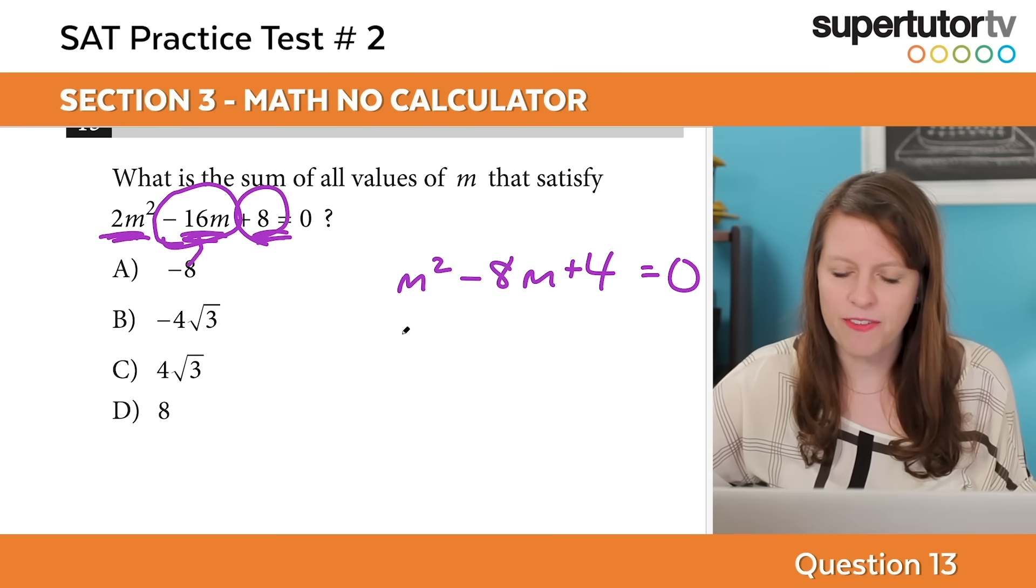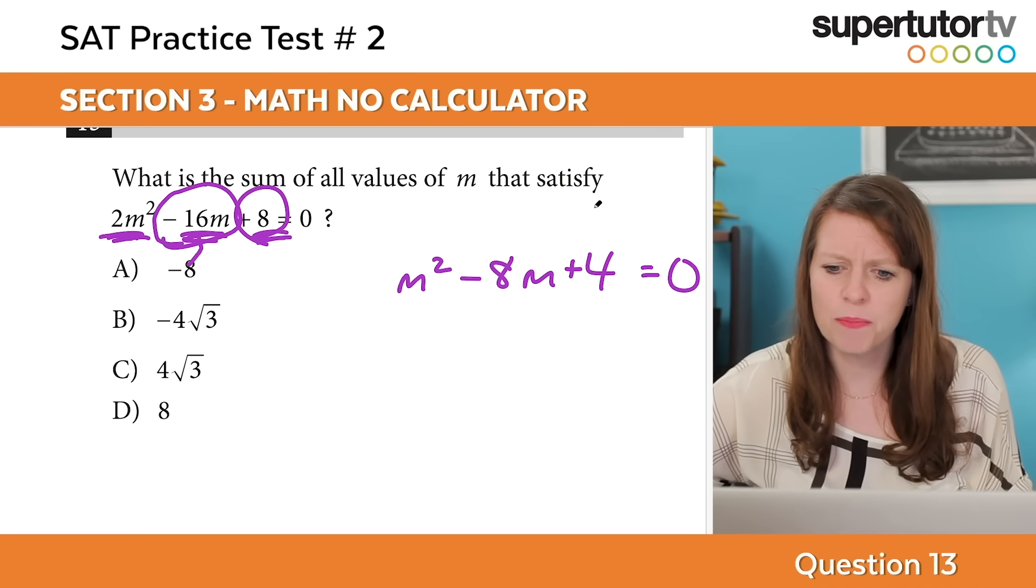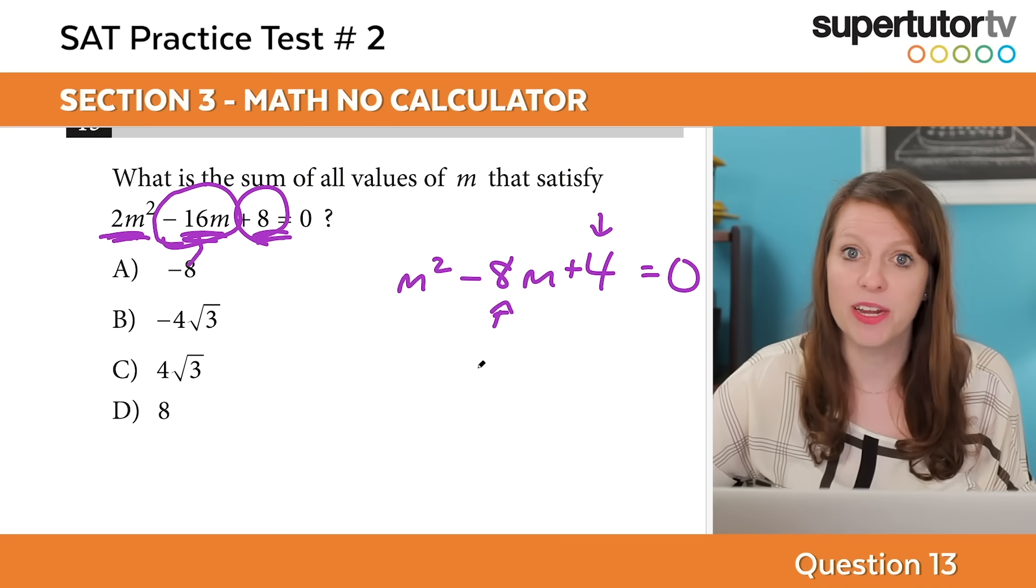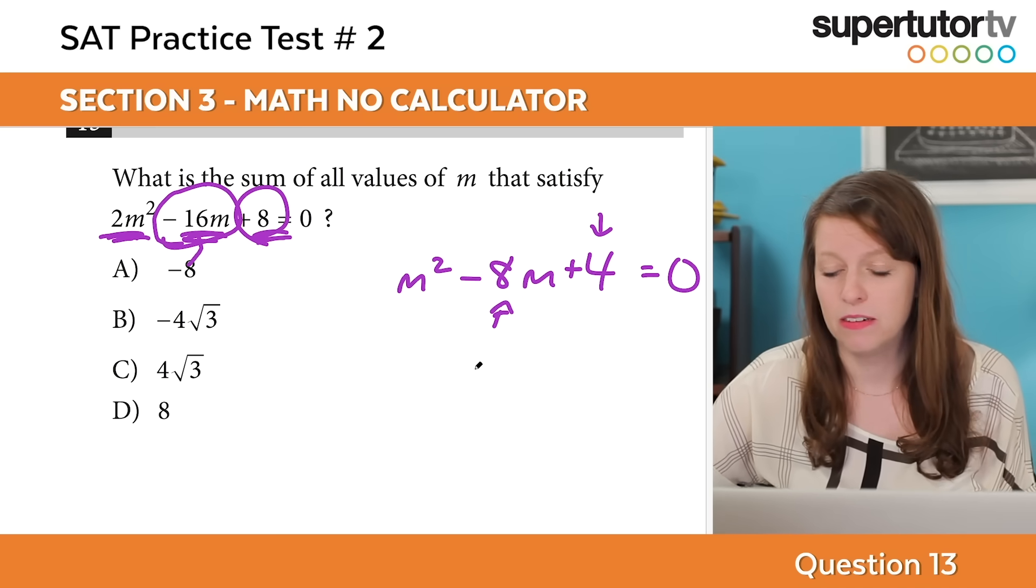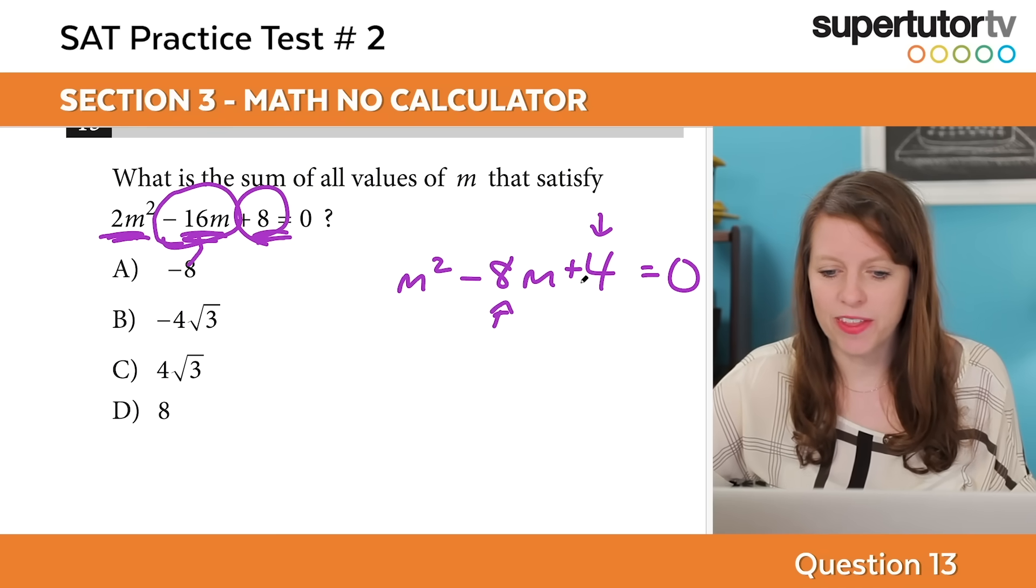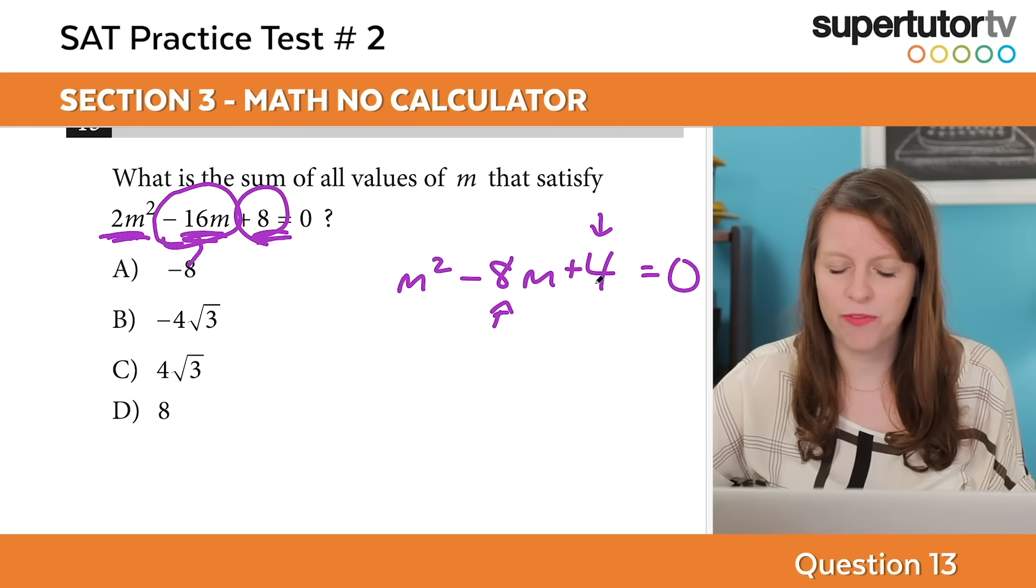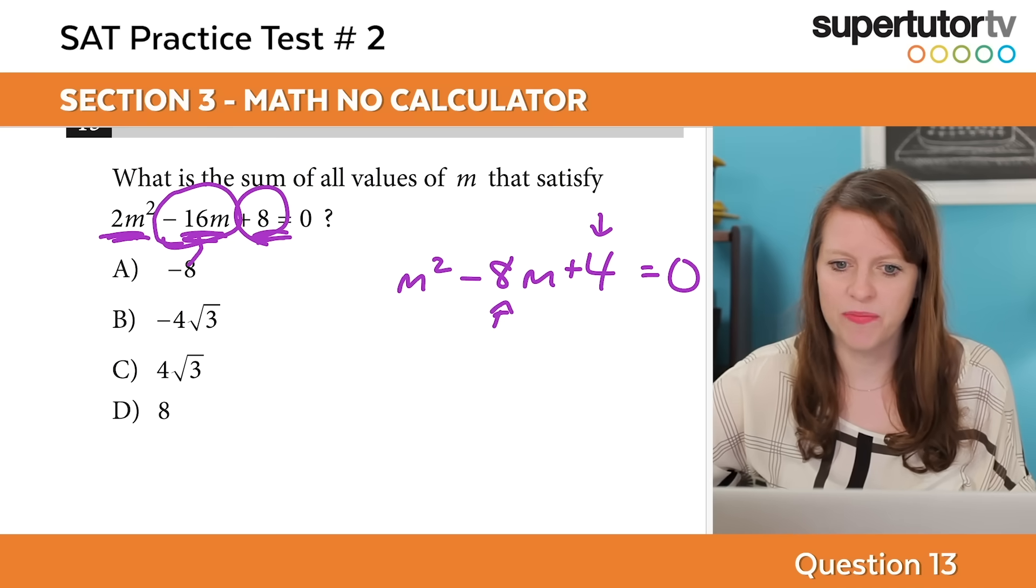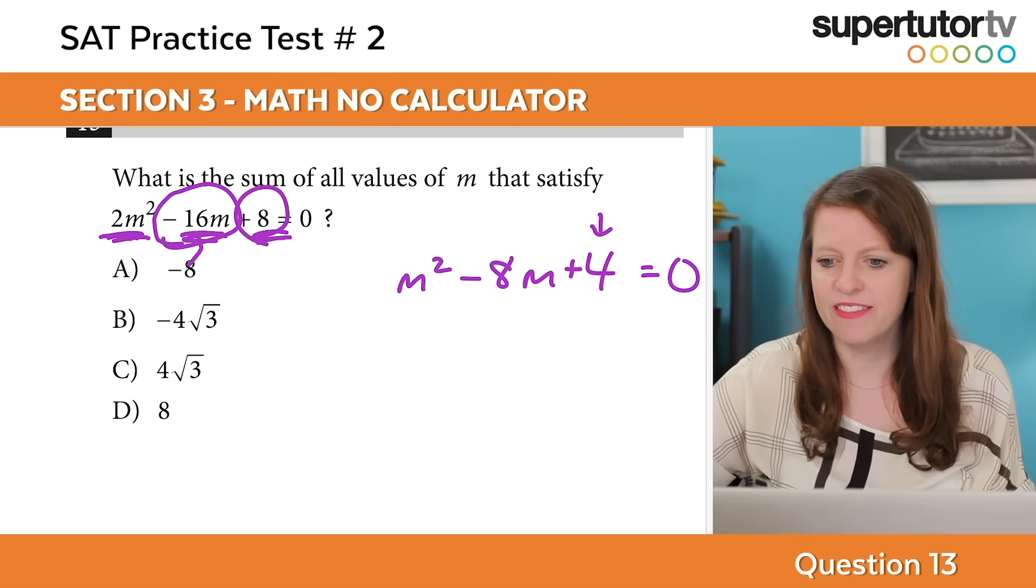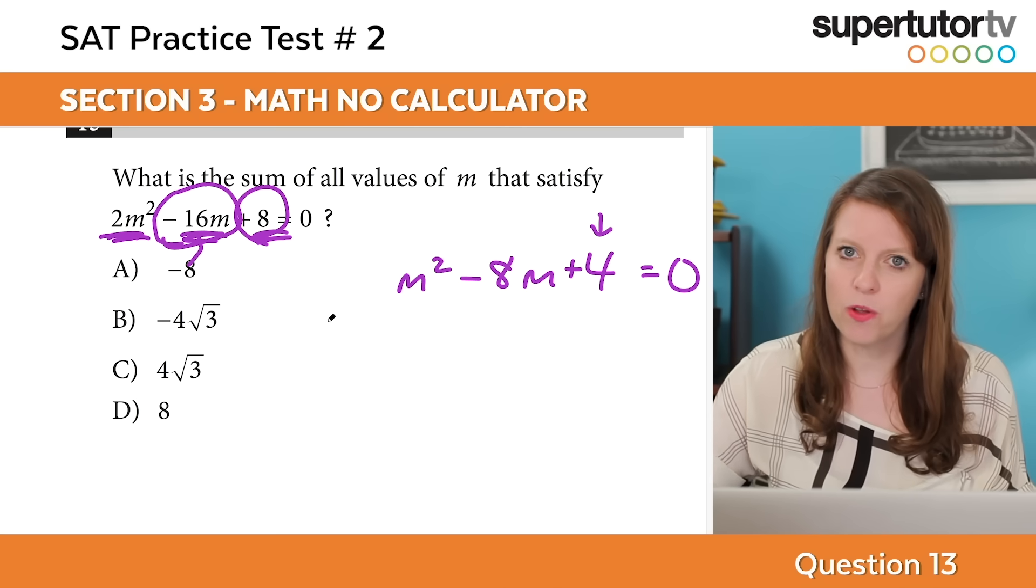Now I'm going to see if I can factor this. I need two things that multiply to become 4 and add up to negative 8. I really have no idea of anything that would do that. I get negative 4 and negative 1, but that's negative 5, not negative 8. So I'm pretty sure this does not factor. But like I said, do not fret. It's not as bad as it looks. We're going to apply the quadratic formula.